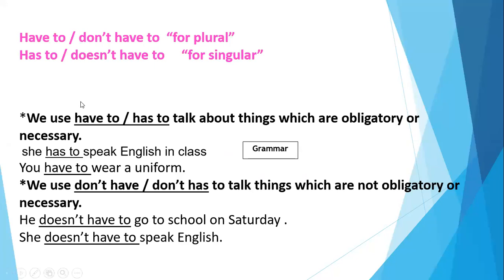Today we are going to talk about 'have to' and 'has to' and the uses of them. First, we use 'have to' and 'has to' to talk about things which are obligatory or necessary. For example: she has to speak English in class; you have to wear a uniform. We use 'have to' for plural and 'has to' for singular.